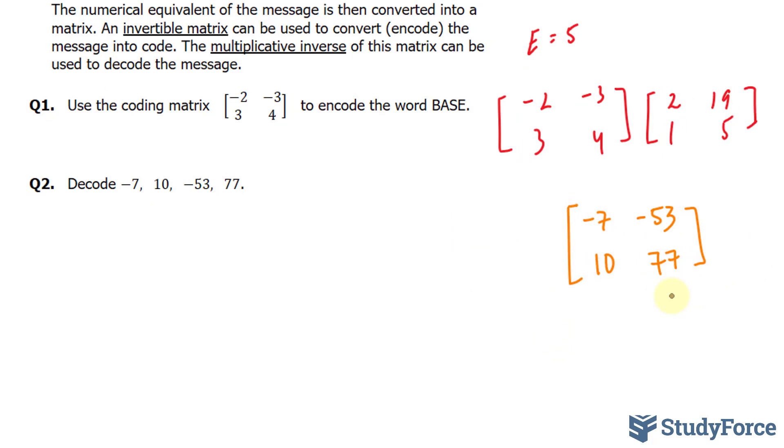What you see is the matrix that you should end up with. And what this tells us is that our word BASE is now -7, -53, 10, and 77. Now, anyone reading this outside of those that are following this video will think that these are a random selection of four numbers. They wouldn't understand that these numbers actually encode the word BASE. And that's the purpose behind this.